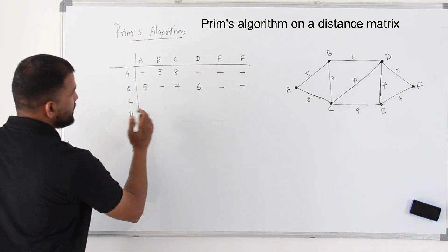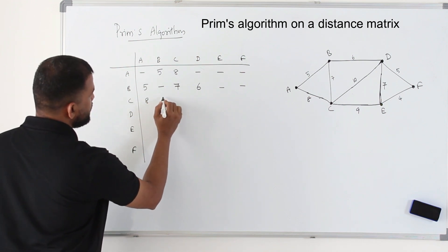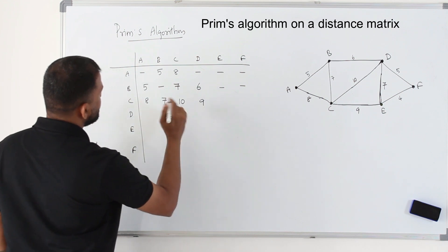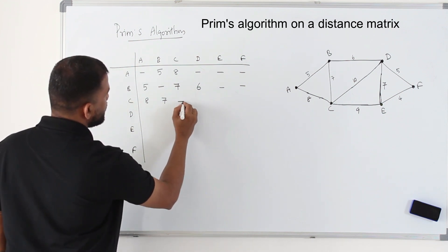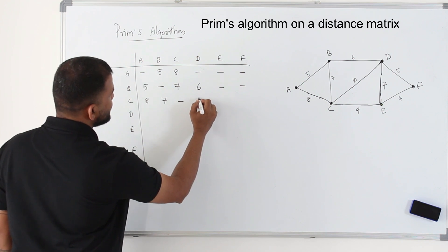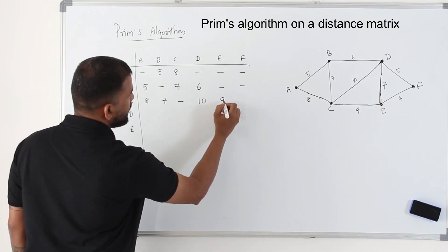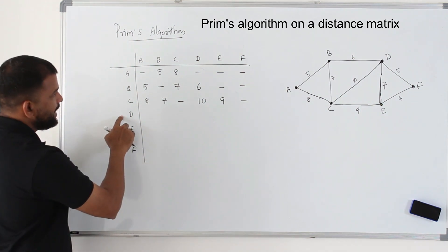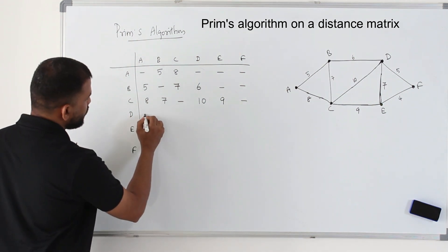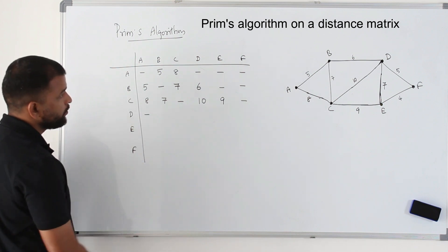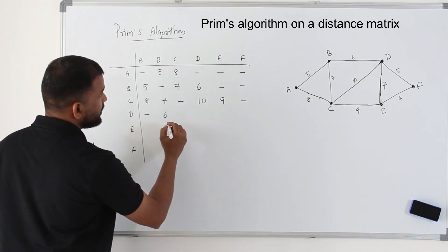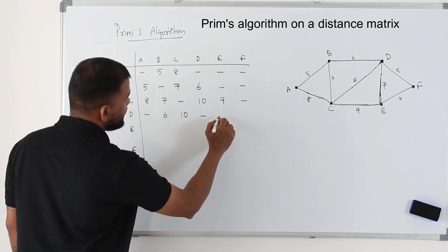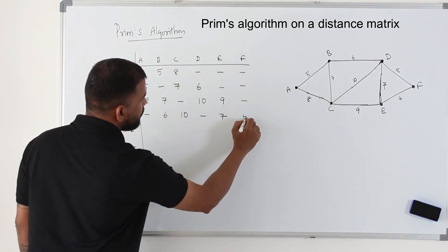Taking C: C to A is 8, C to B is 7, C to C — nothing, C to D is 10, C to E is 9. Then from D: D to A — no direct edge, D to B is 6, D to C is 10, D to D — nothing, D to E is 7, D to F is 5.